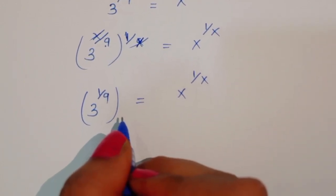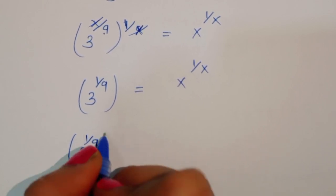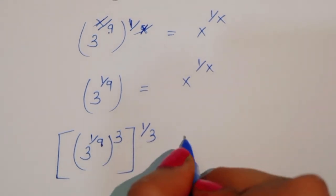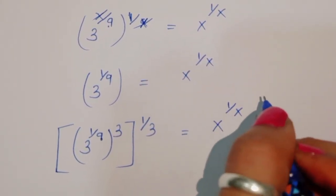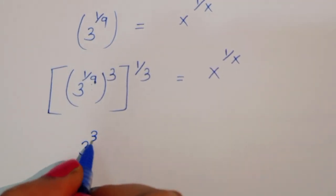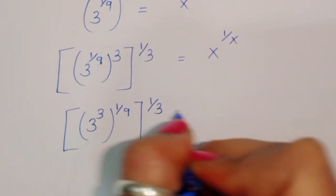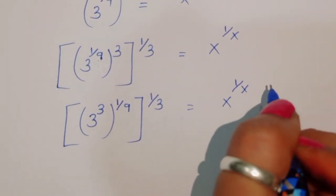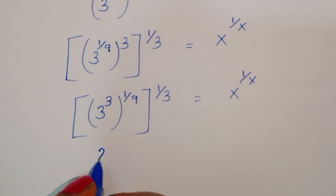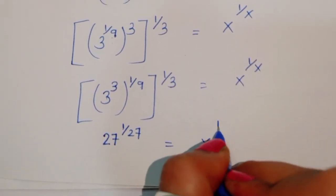Now we work with 3 power 1/9. We can rewrite this by introducing power 3 and power 1/3 — the 3 and 1/3 cancel each other, keeping the value the same. So we write 3 power 3, taken inside, raised to power 1/9, then outside power 1/3. Since 3 power 3 equals 27, we get 27 power 1/27.